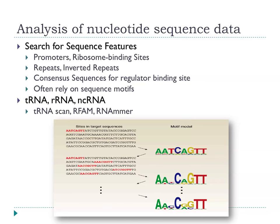Before going into more detail about coding sequences, there are things you can examine from nucleotide sequence alone without looking at proteins: promoters, ribosome binding sites, repeats, and consensus sequences for regulators. You can make models of binding motifs — visualised as sequence logos — starting with a simple model and refining it as you add more examples, identifying which positions are conserved and which are variable. You can also predict tRNAs, ribosomal RNAs, and various non-coding RNAs using specific algorithms to find them in the genome.